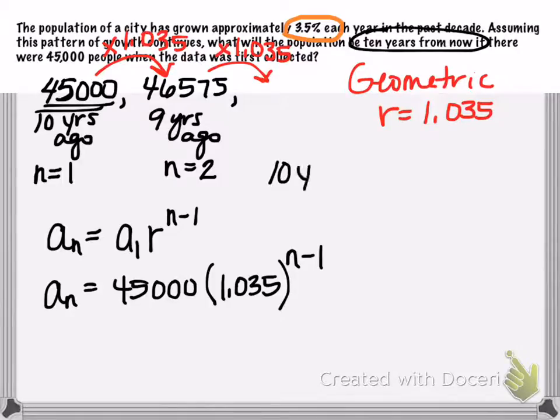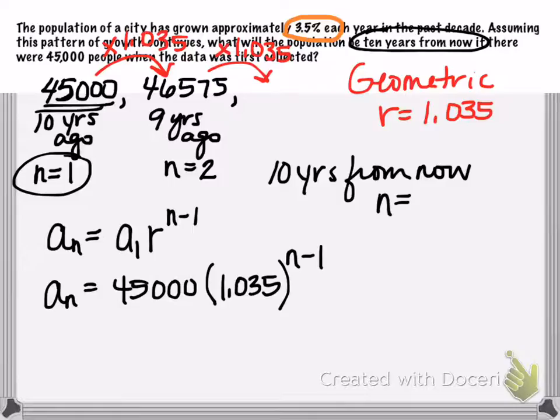So you've got to think, well, 10 years from now, then my n value here, if it was n equals 1 ten years ago, then 10 years from now I need my n value to be 20. Therefore, I'm looking for the 20th term.